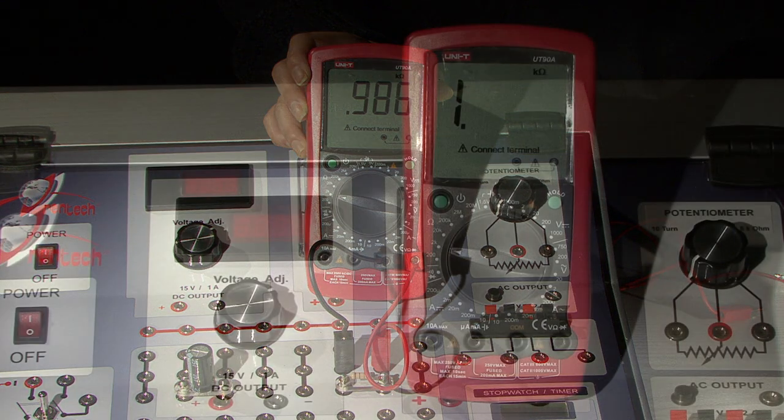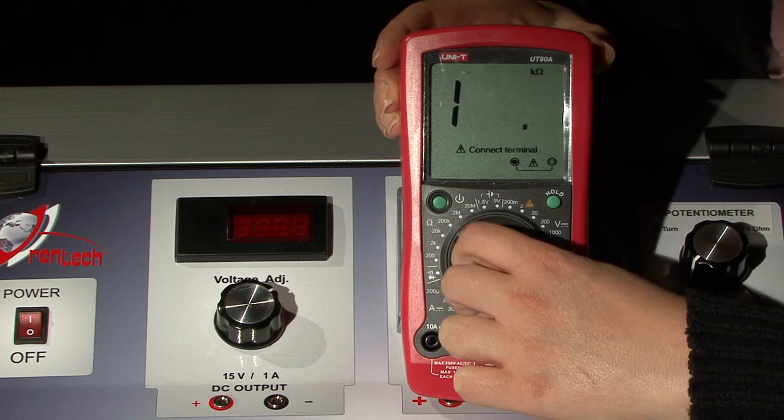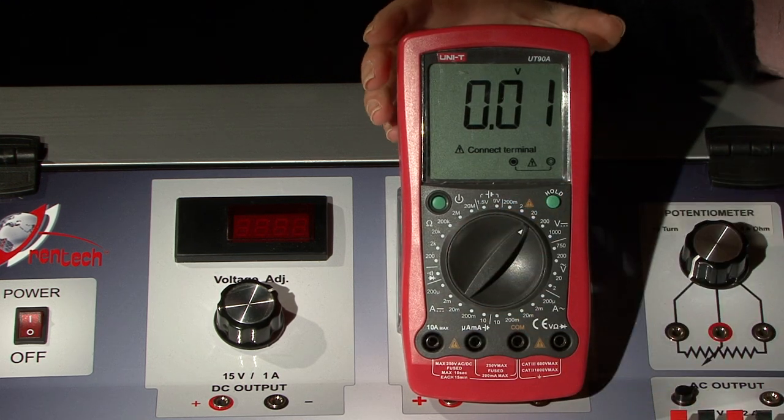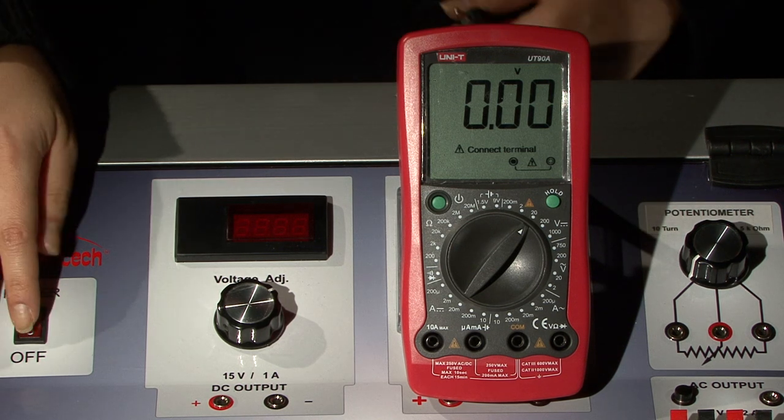Now let us make a voltage measurement. First, we adjust the multimeter. We adjust the power supply to an arbitrary voltage.